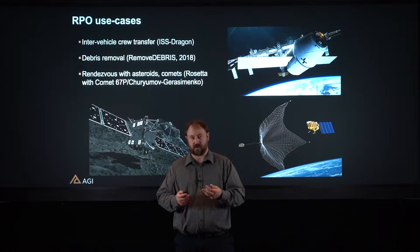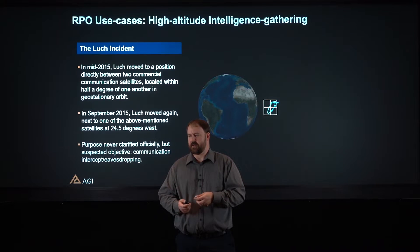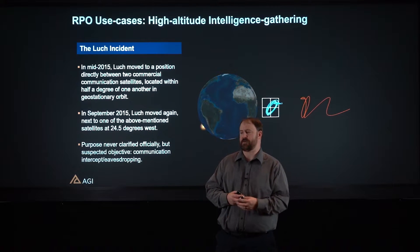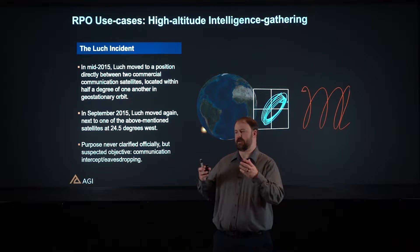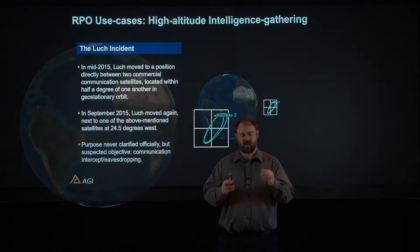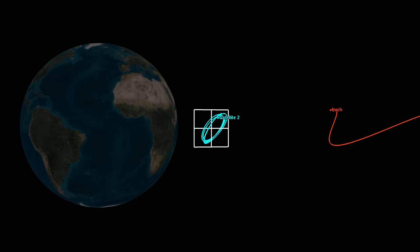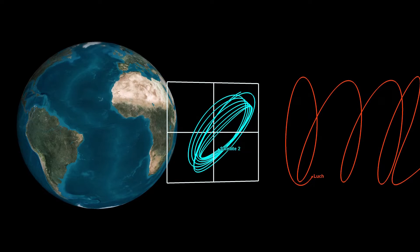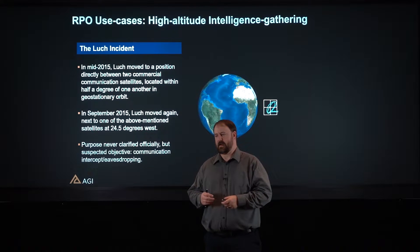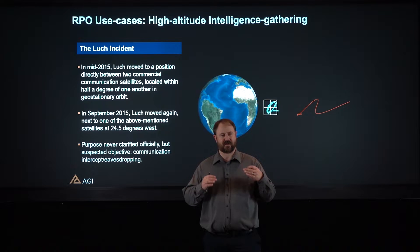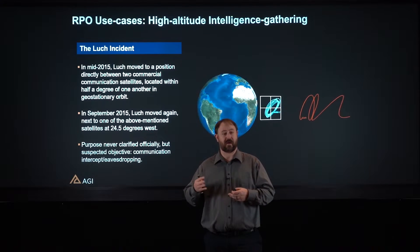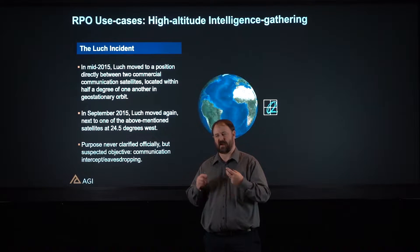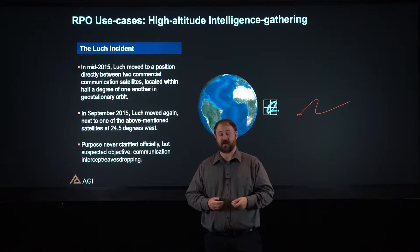Other use cases include rendezvousing with asteroids and comets, which are missions of increasing interest. One of the really big use cases — and kind of why a lot of us are more interested in these types of operations — is intelligence gathering and knowing where our assets are and where other people's assets are. In 2015, we observed the Looch spacecraft perform rendezvous and prox ops near another satellite. It came in and got really close, flew around for a while, and then moved again to visit other satellites over time. The purpose was never really clarified, but the sense is they were trying to do some eavesdropping or demonstrate the technology.